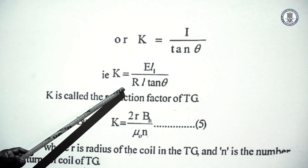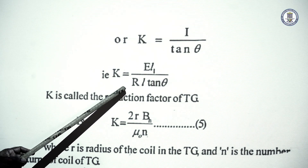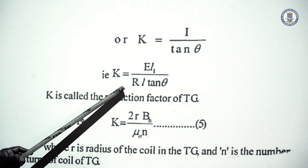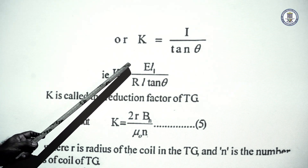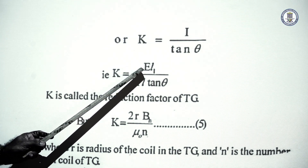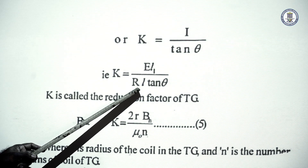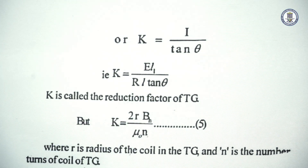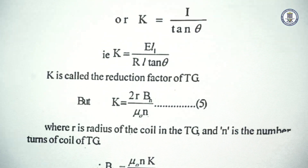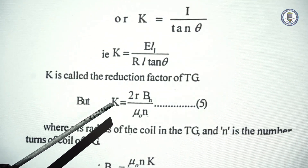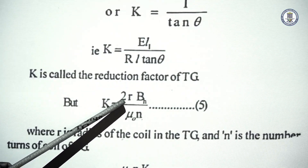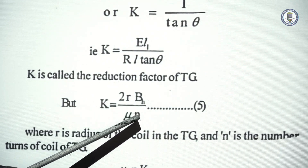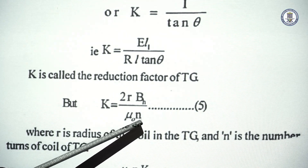So this is the principle involved. The reduction factor is obtained by the formula K = E·L1 divided by R·L·tan(θ). The reduction factor is also connected to the BH value by the equation K = 2R·BH / μ₀N.